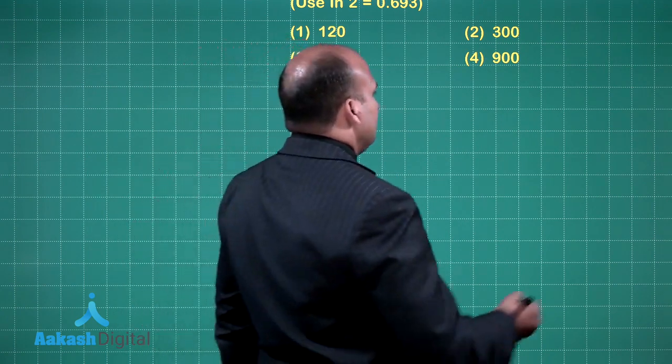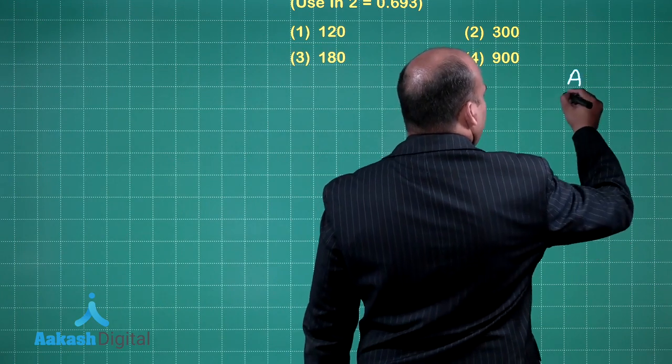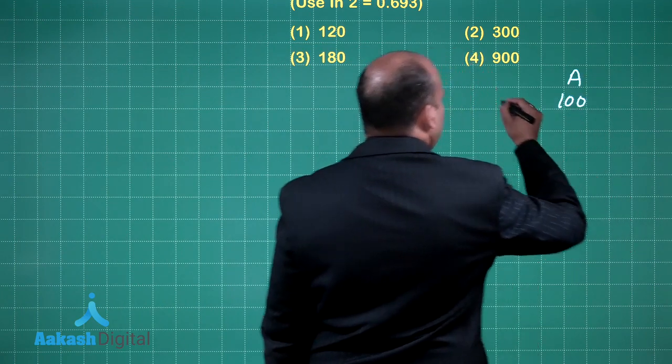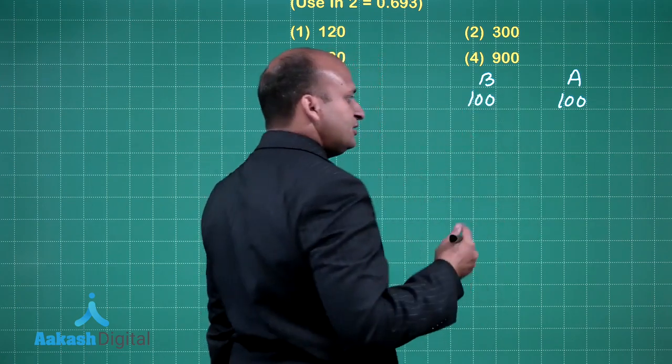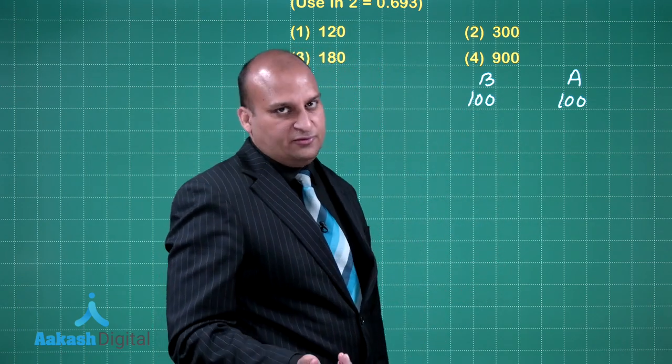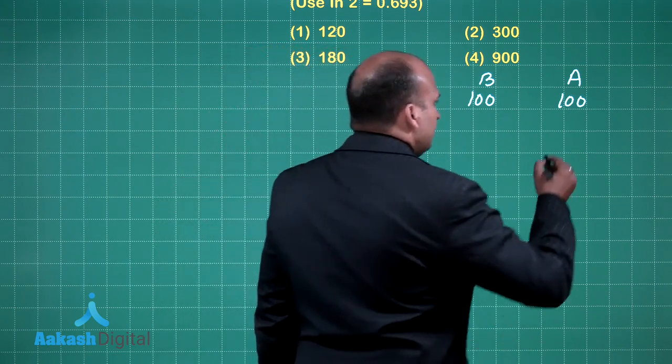Let me give you both the ways in which the question can be solved. So first the cheat way. Suppose we are starting with A, and there is 100 particles of A, there is 100 particles of B. Since it is following the first order kinetics, the half-life is independent of initial concentration.